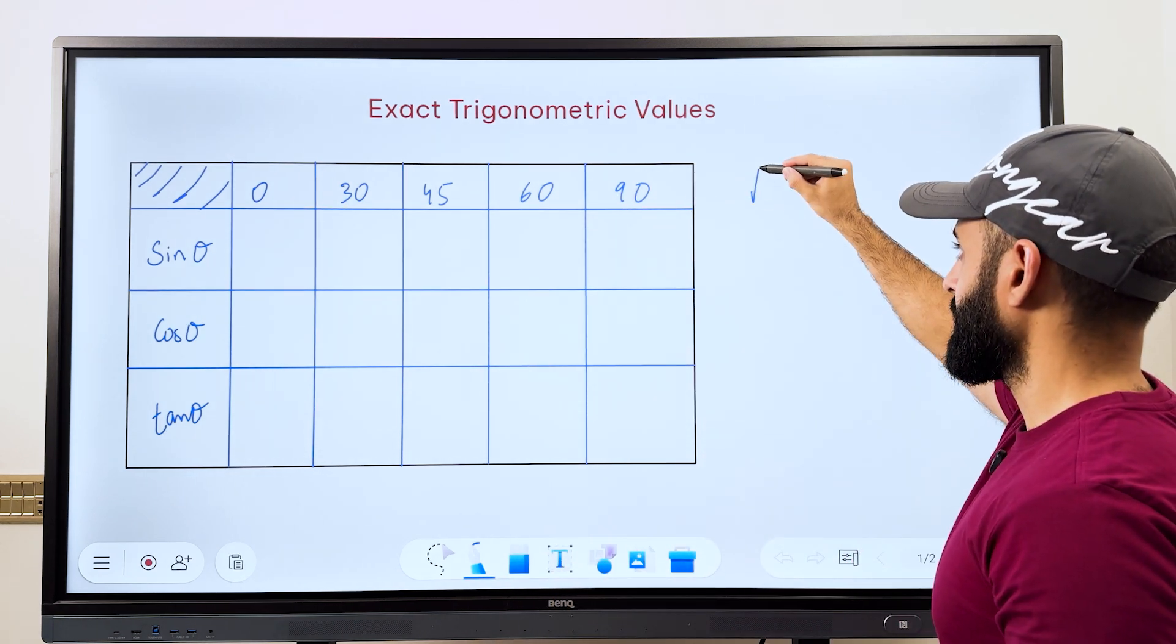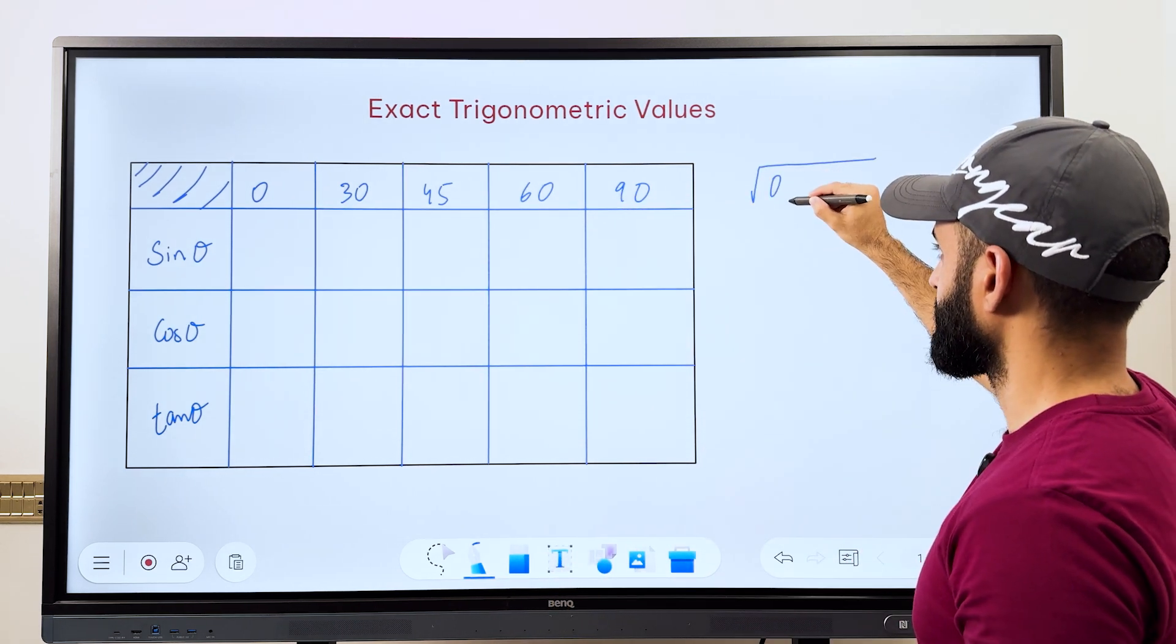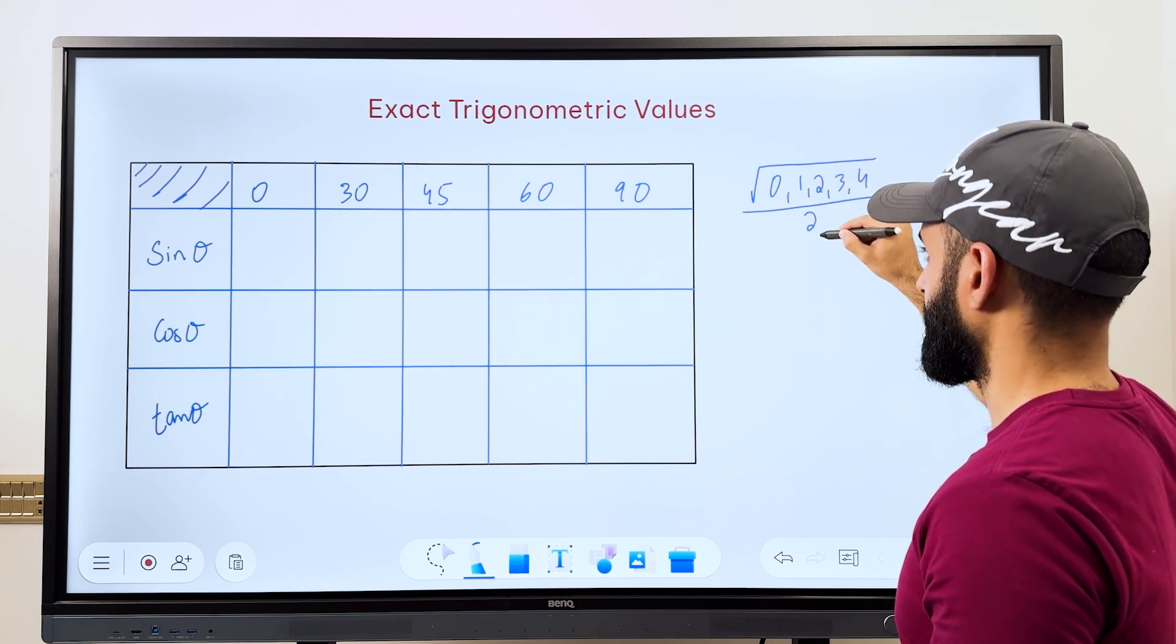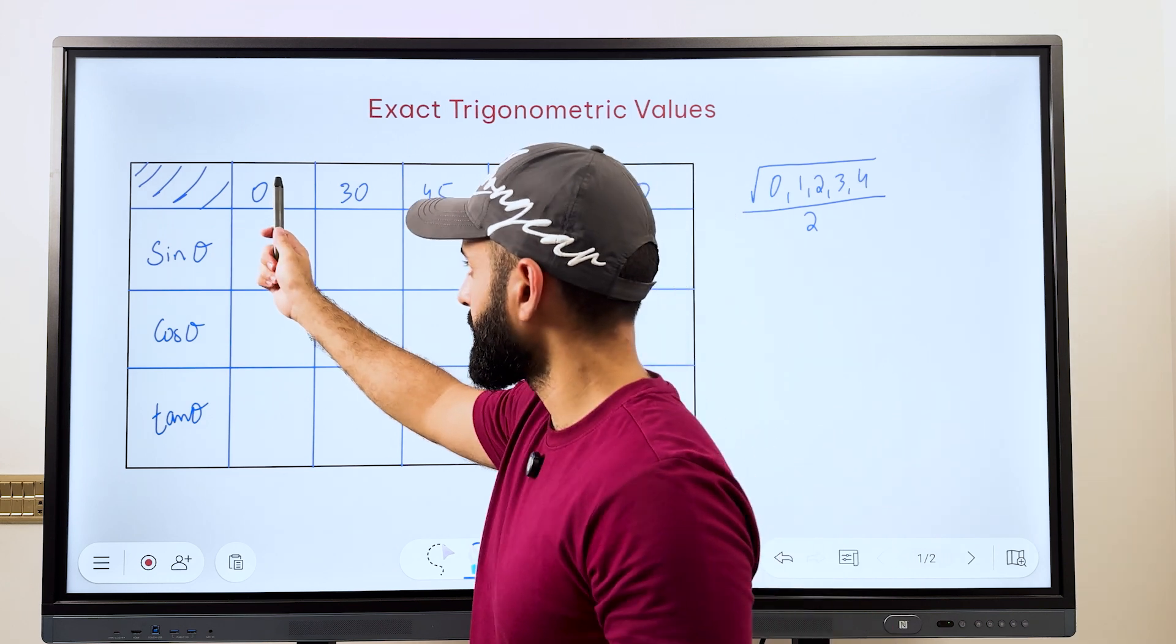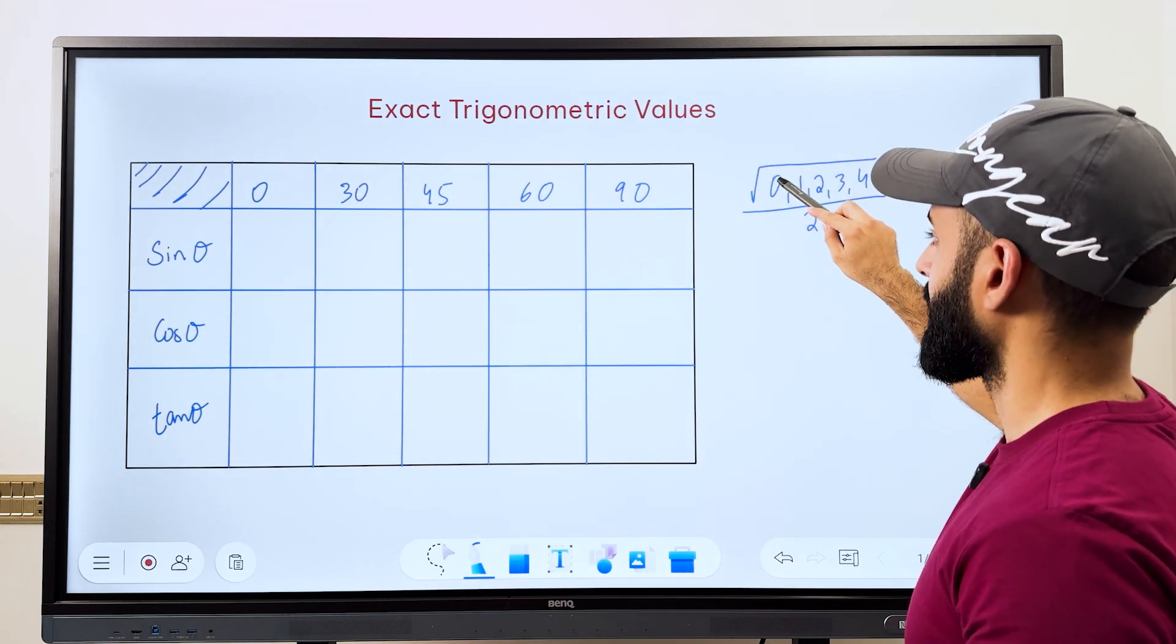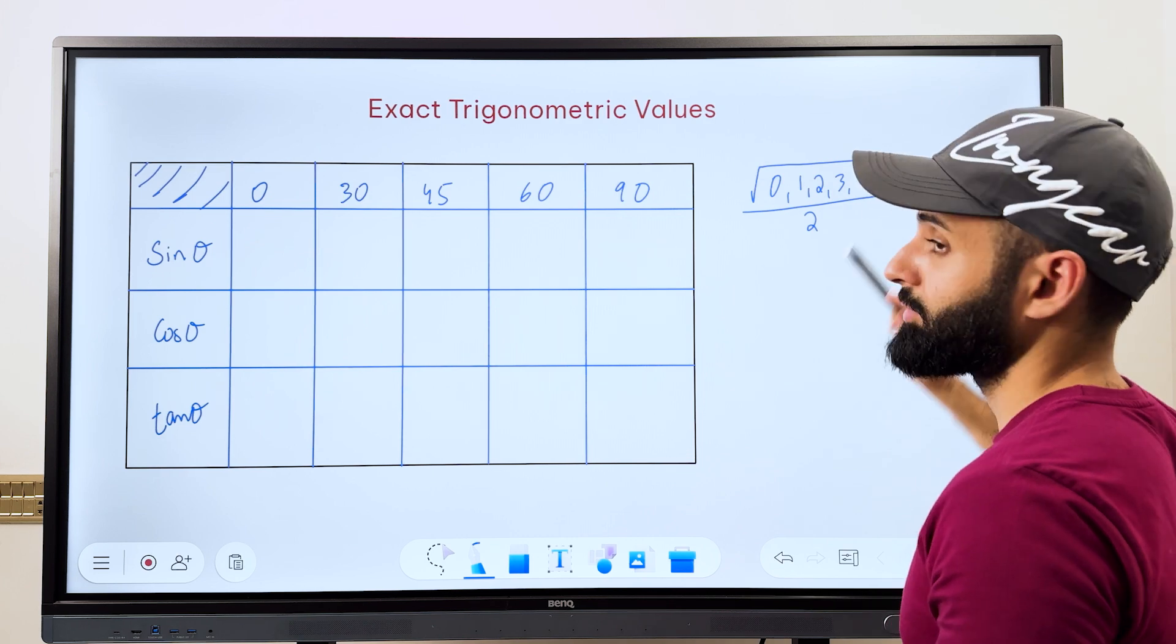Now here is square root of 0, 1, 2, 3, 4 divided by 2. Now observe that here we have how many values: 1, 2, 3, 4, 5 and inside the square root also we have 1, 2, 3, 4, 5 values.